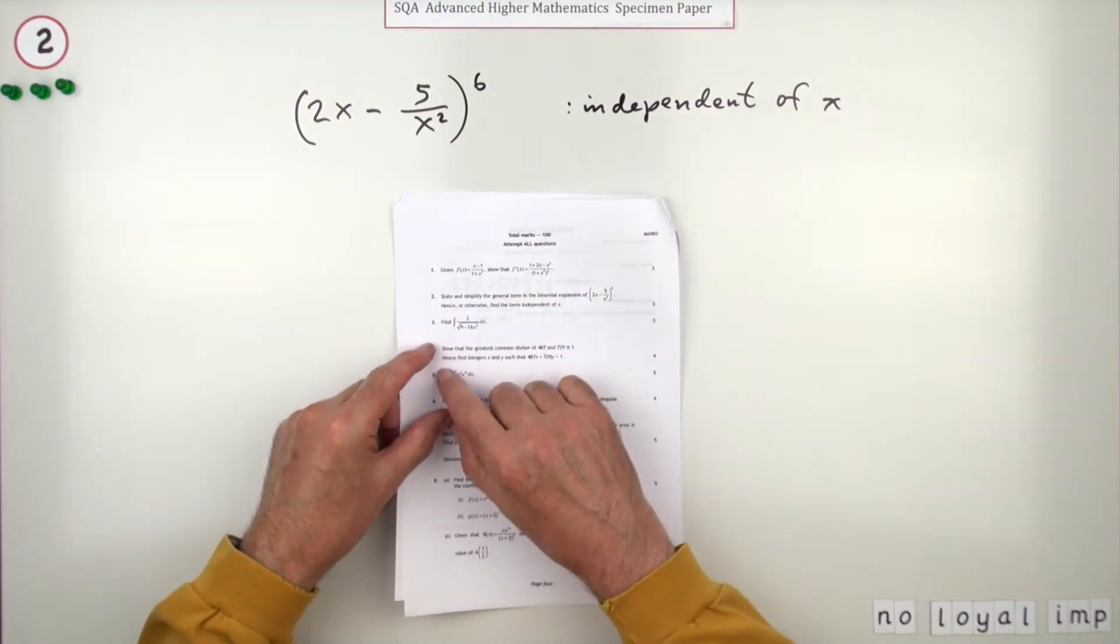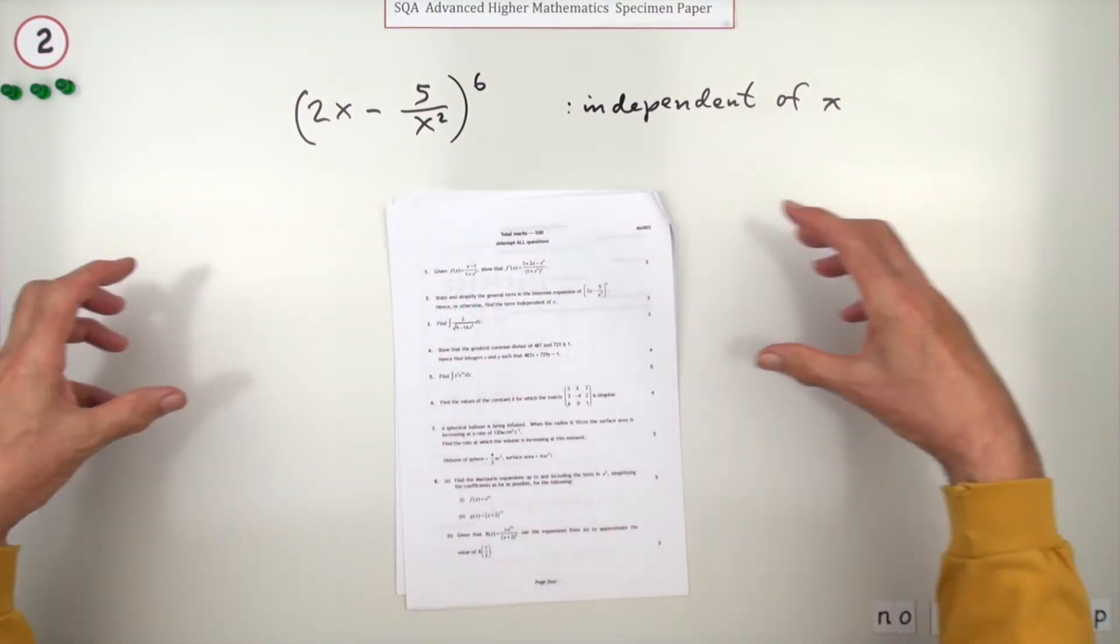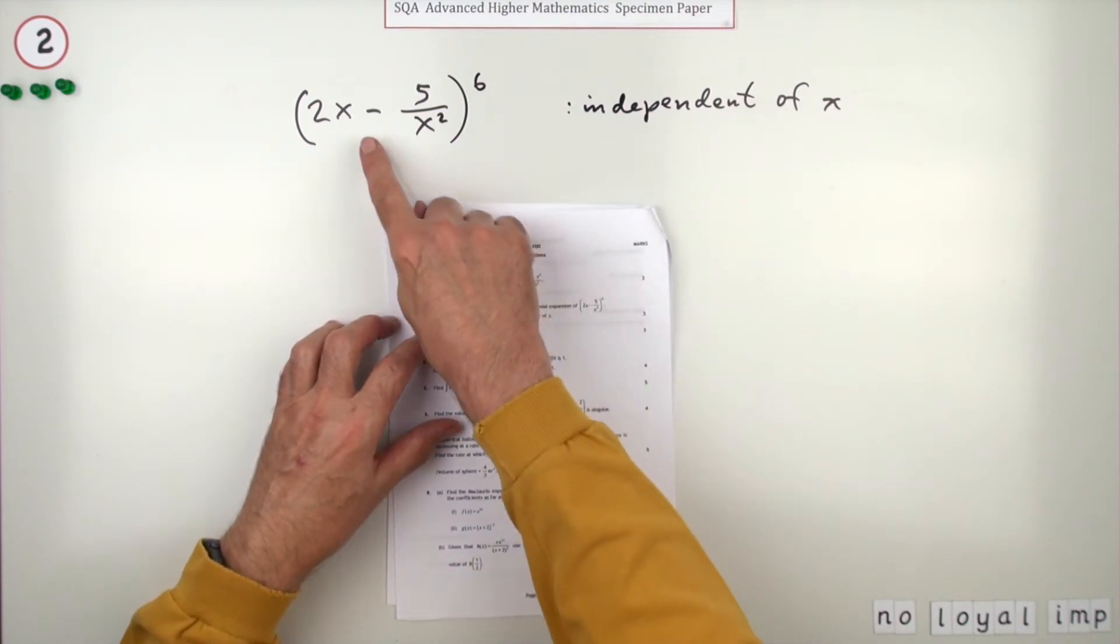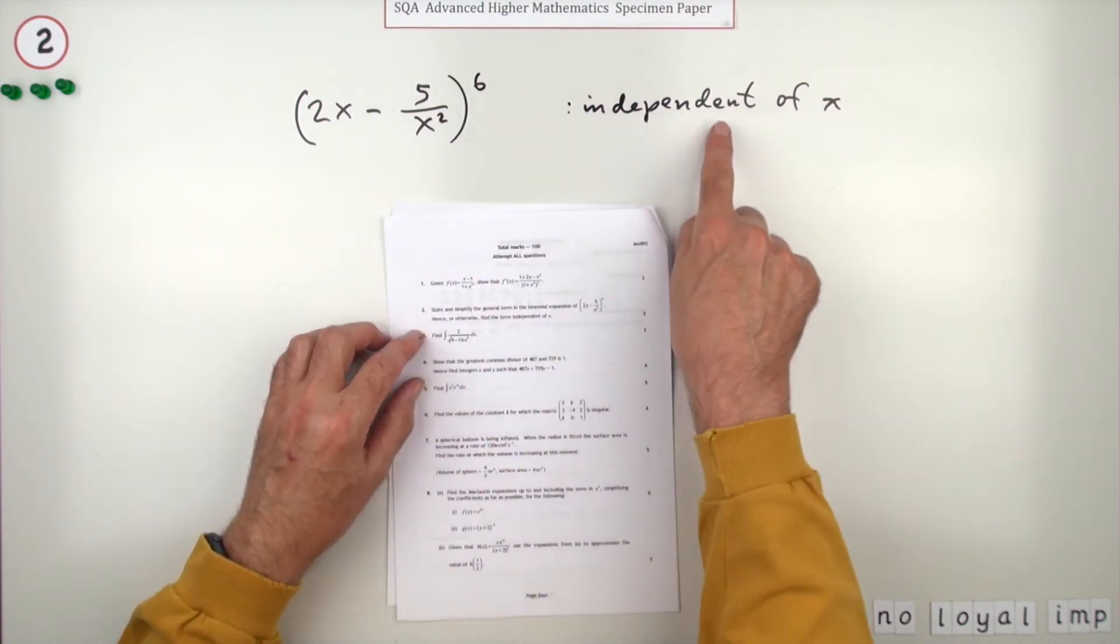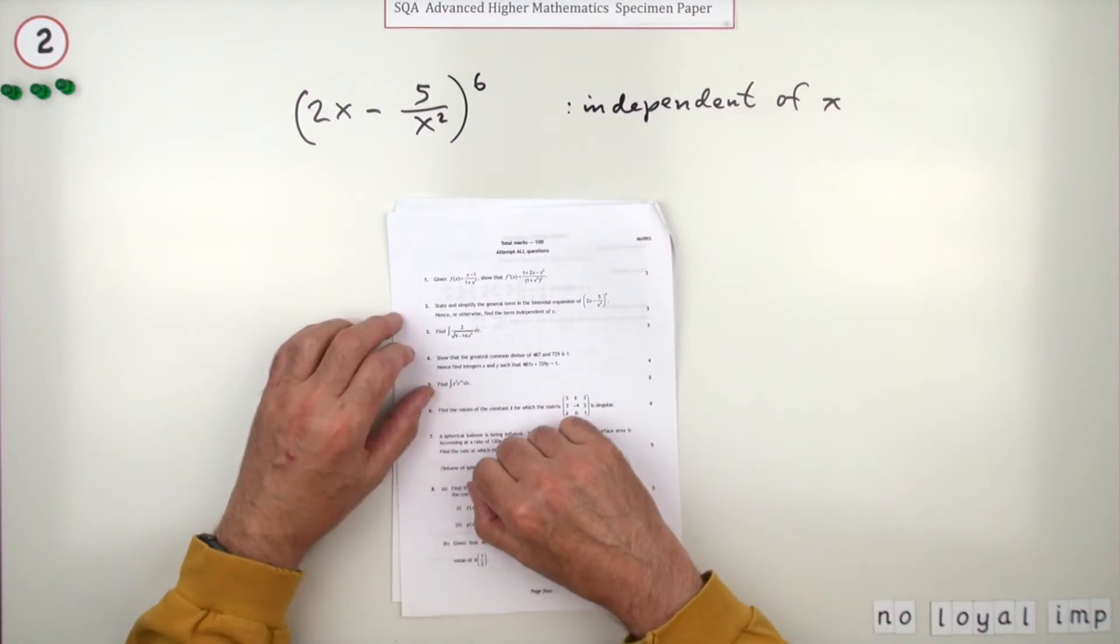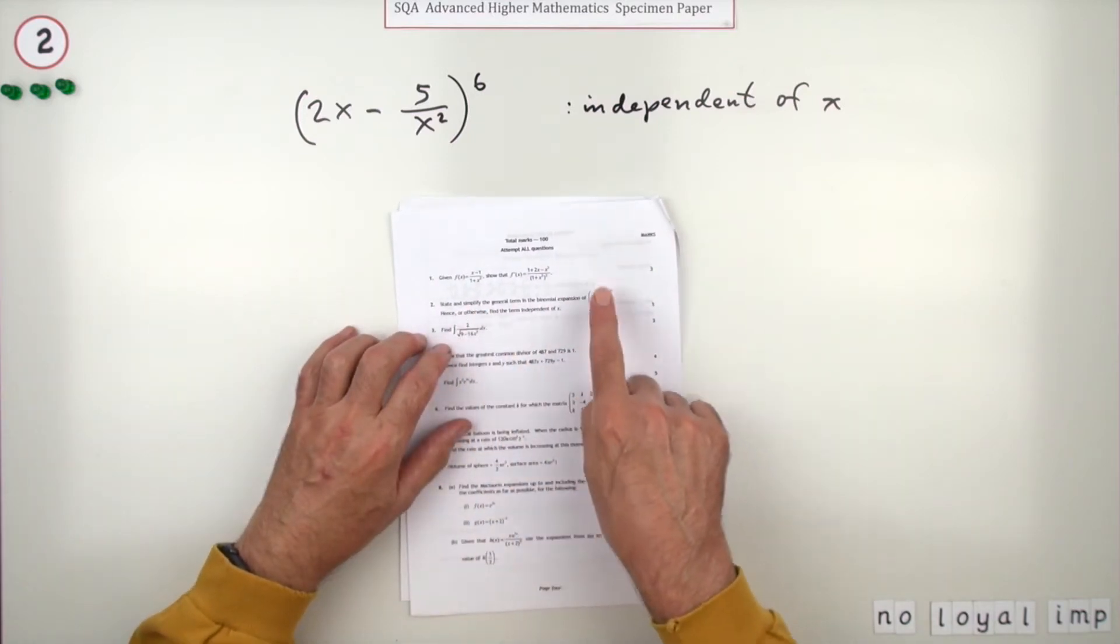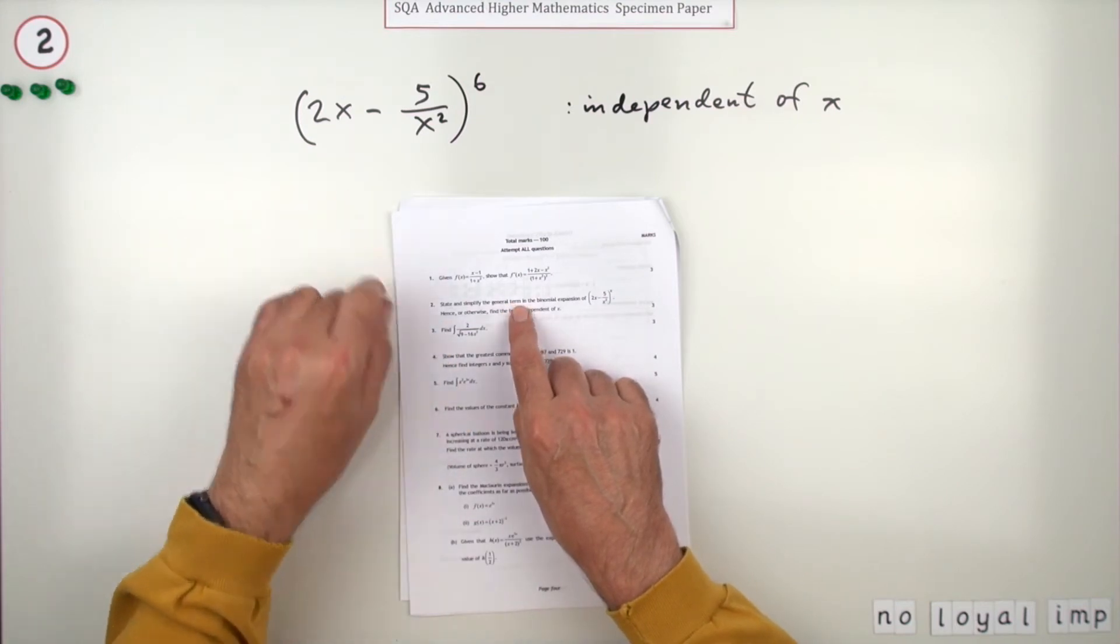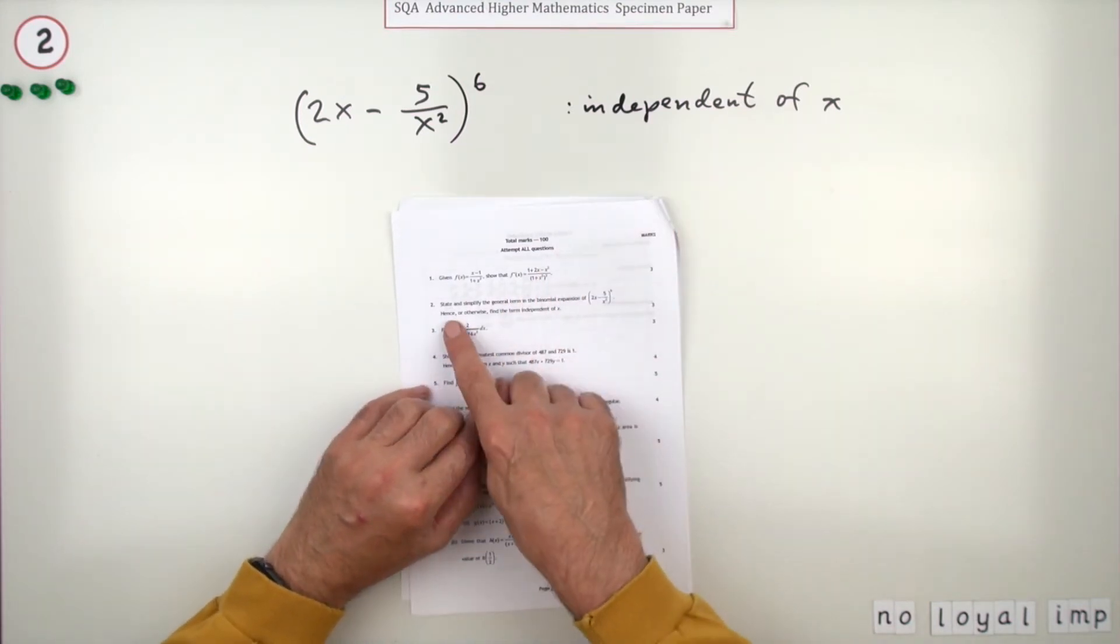Number two then, a binomial expansion, but not the tedious one where we've got to expand all out and write all the terms. Here it just wants you to find a particular term in this—the term which is independent of x. But it leads you along the way quite rightly by saying state and simplify the general term.